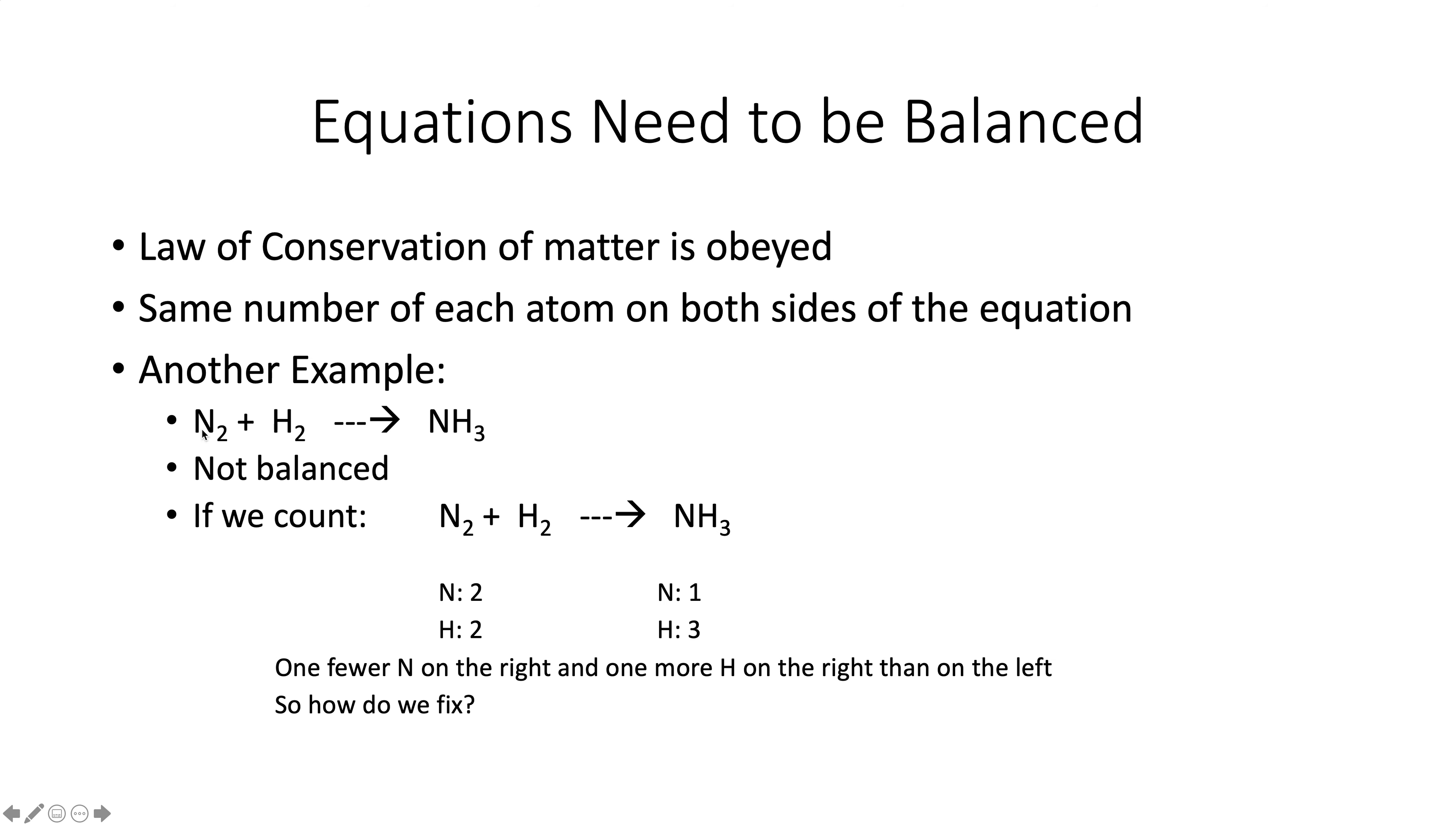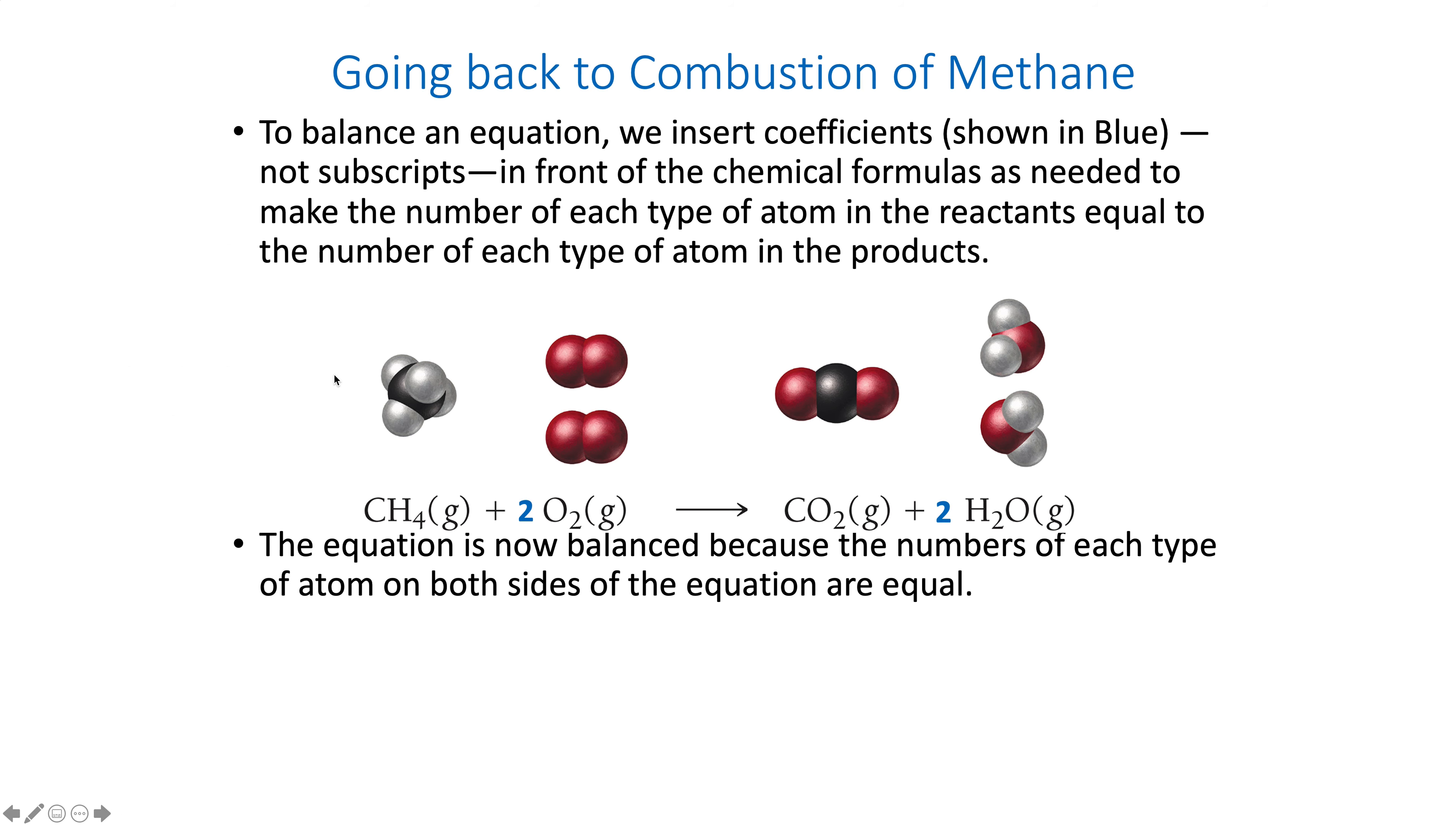This is another example, and we'll talk about why it's not balanced. If you count atoms, just do some bookkeeping. I have nitrogen and hydrogen. Over here, I have nitrogen and hydrogen. You have two nitrogens and two hydrogens. Here, I have one nitrogen and three hydrogens. It looks like we converted a nitrogen into a hydrogen, but that's not what happens. So how do we fix this? How do we make it balanced?